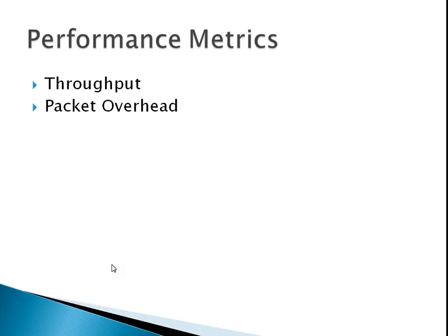So what are the performance metrics we have used to study the impacts of wormhole attacks? First, we have used throughput, which means the amount of packets or data being transmitted from point A to point B. Packet overhead refers to the amount of time it takes to transmit packets — so if you are transmitting packets from point A to point B, how long is it going to take?